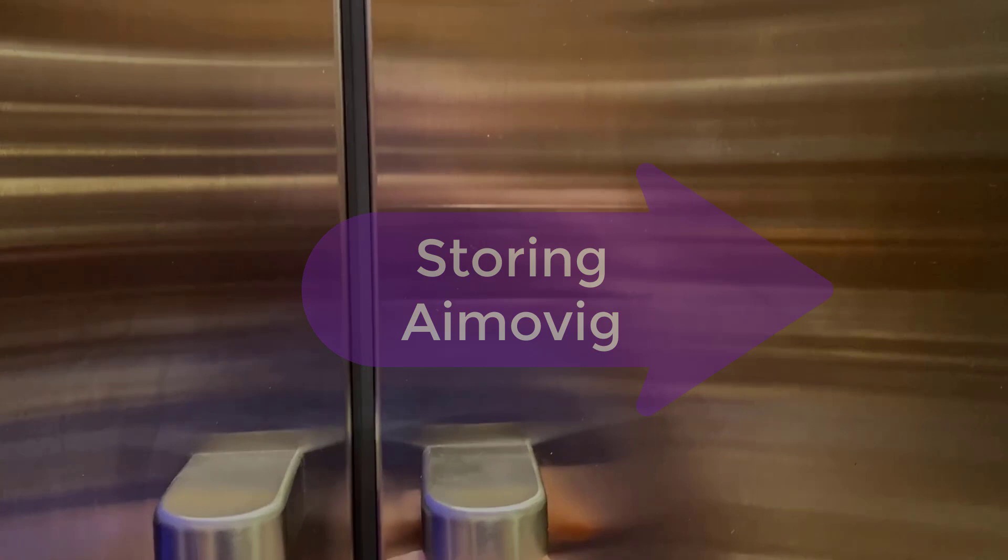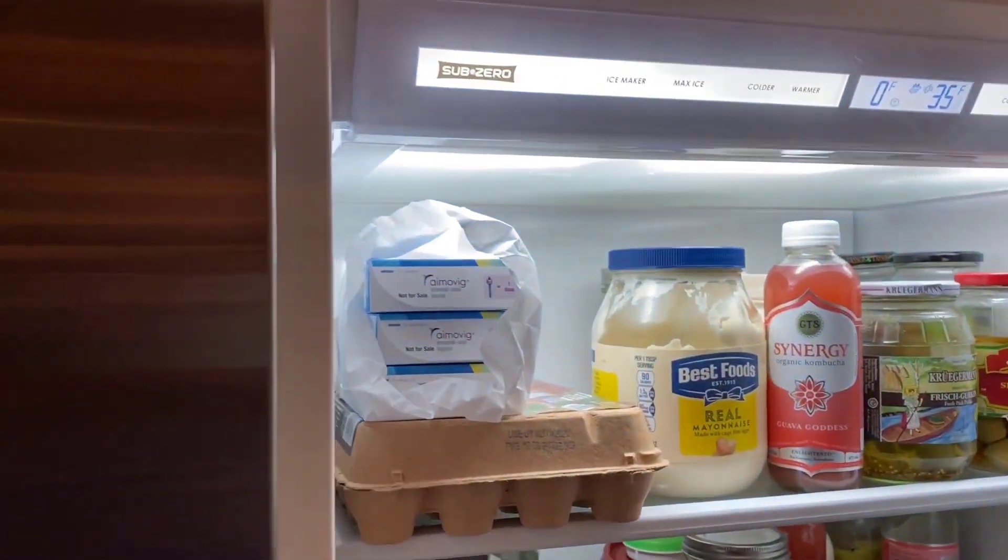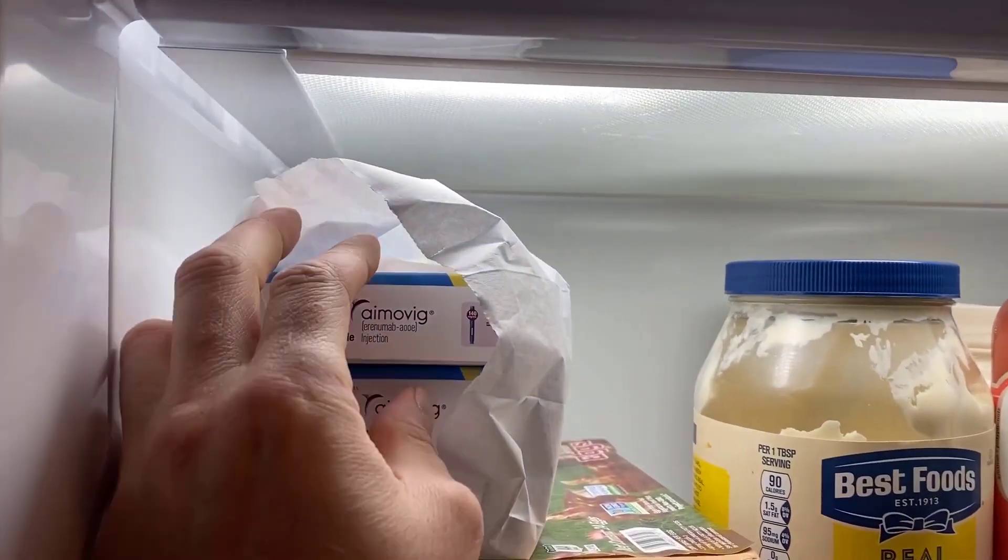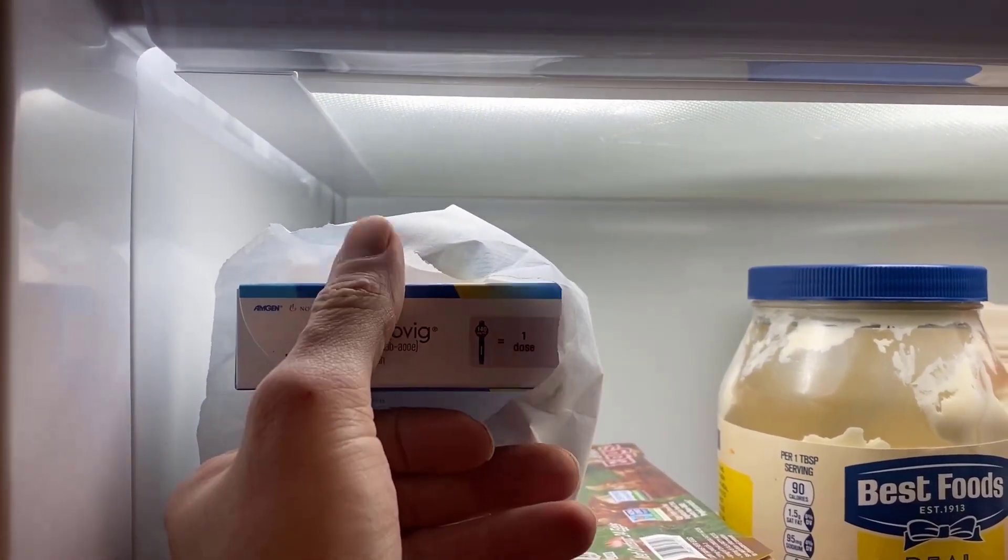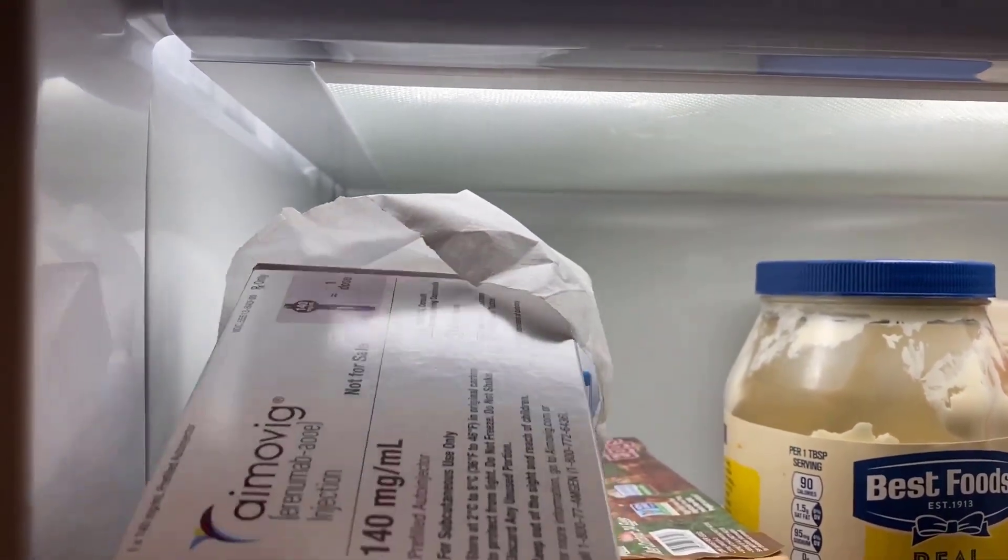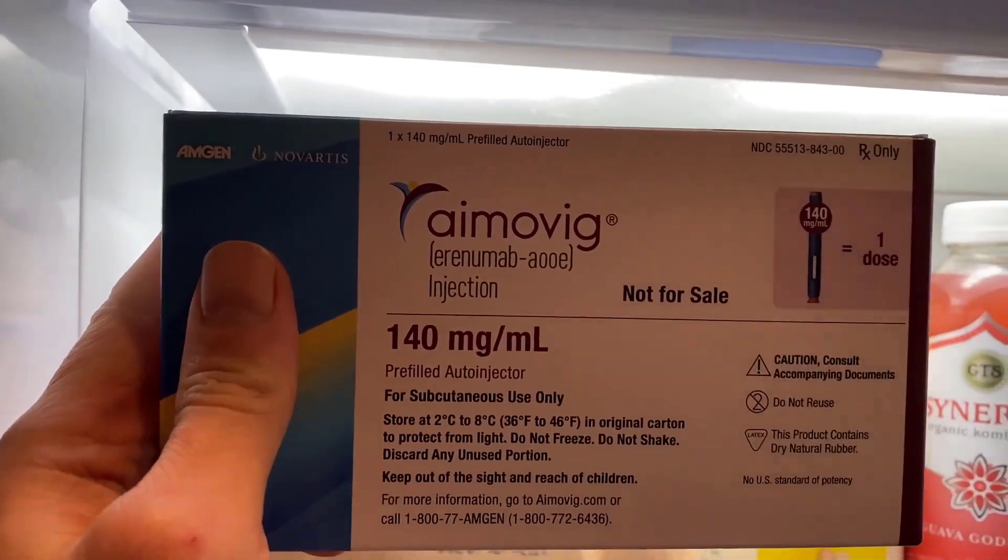Remember to store Amovig in the fridge. You can leave it unrefrigerated for up to seven days, but if you haven't used it within seven days and it's been at room temperature, you have to throw it away. Keep it in its original container, don't freeze it, and don't shake it.